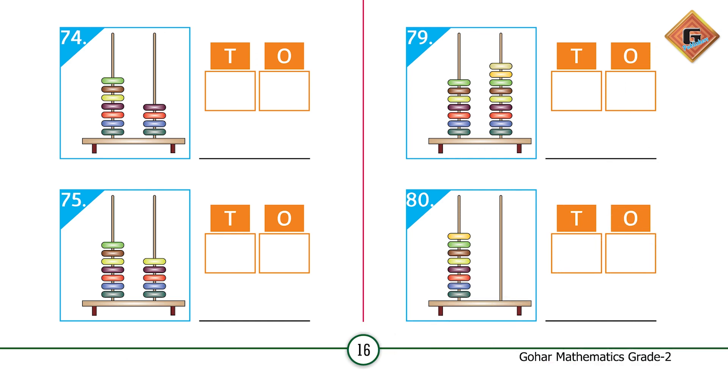When 9 comes with any tens digit then it's going to change. When we add one more bead to 9, it becomes 10, and we add that to the tens rod. So there are eight beads on the tens rod and none on the ones rod. We write 0 under ones and 8 under tens, and the number name is 80.